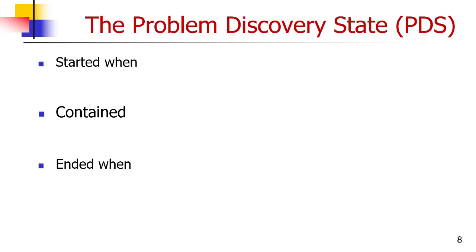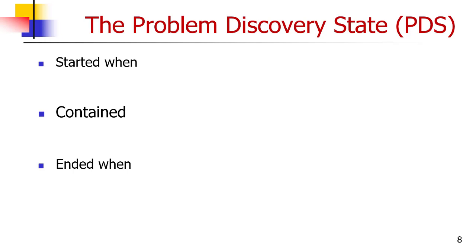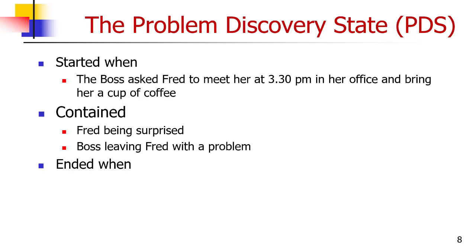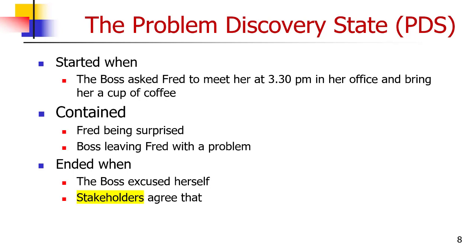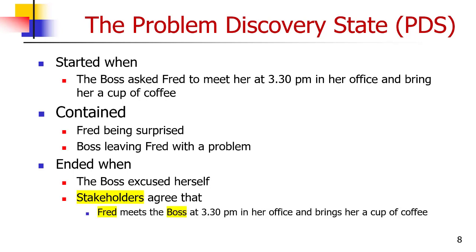The problem-discovery state started when the boss asked Fred to meet her at 3:30pm in her office and bring her a cup of coffee. It contained Fred being surprised and the boss leaving Fred with a problem. In this example, Fred didn't have any choice. The state also ended when the stakeholders agree that Fred meets the boss at 3:30pm in her office and brings her a cup of coffee. In general, the state ends when the costs and schedule are acceptable and feasible — and in this instance the boss knows it's feasible, otherwise she wouldn't have asked Fred to make the cup of coffee. Or are we assuming that?